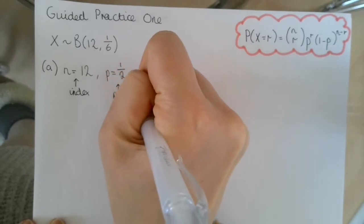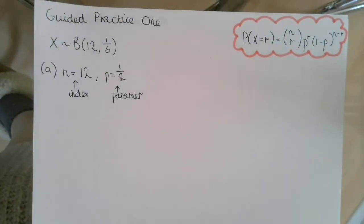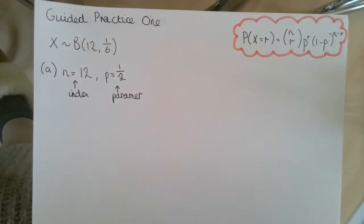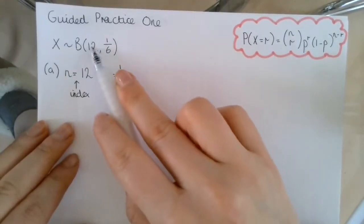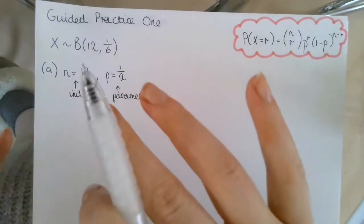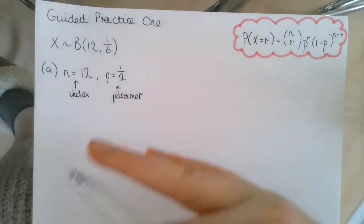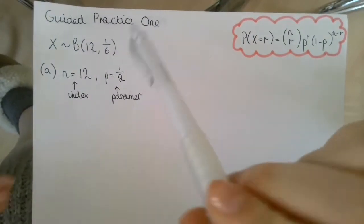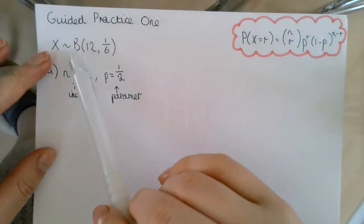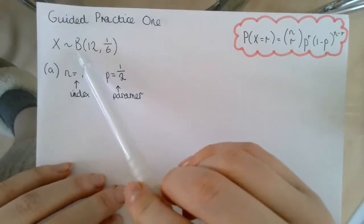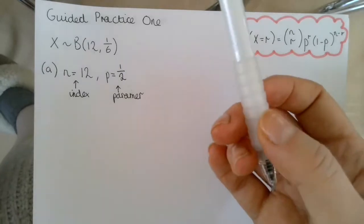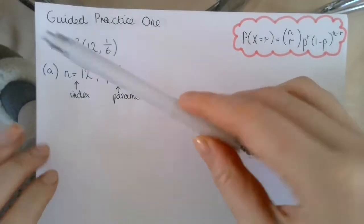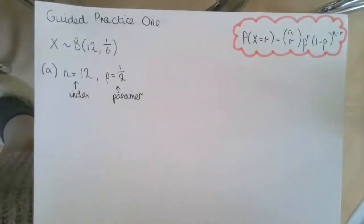All this means is that when we have a random variable that is binomially distributed, we have a fixed number of trials — which is 12 here — and there are two possible outcomes: success and failure. There's a fixed probability of success, which is the p-value, our parameter, and the trials are independent of each other. For example, this random variable could be the event of rolling a dice 12 times and getting a 1. We either get the 1 or we don't; the probability of getting a 1 is 1/6 and we've got 12 trials.